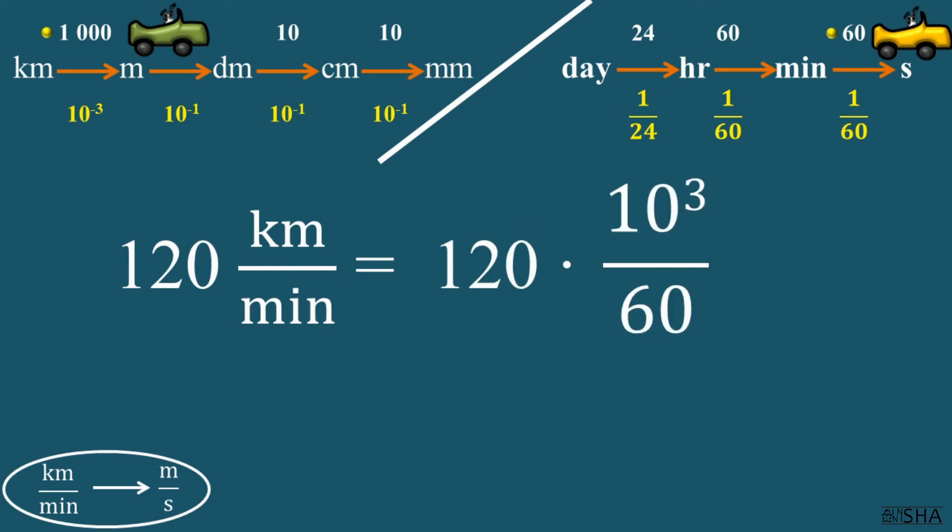We multiply 120 by 10 to the third power. And we put 60 in the denominator. Let's simplify the fraction and do some calculations. We get 2 times 10 to the third power. The answer can be written in this form, or you can calculate further and write down 2000 meters per second.